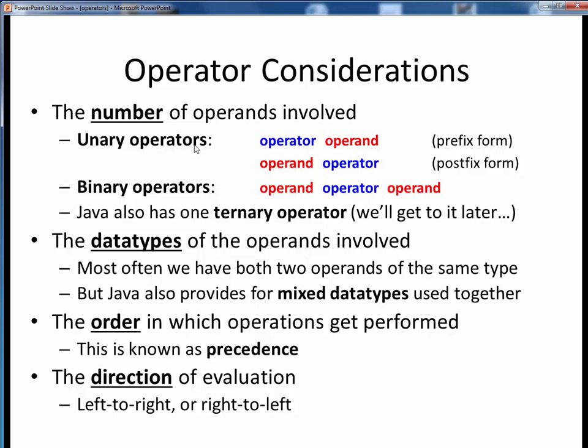Java also has several unary operators, which involve only one operand. As we see here, unary operators may be of the prefix or the postfix form, which simply designate which side of the operand they appear on. We'll see examples of this shortly.